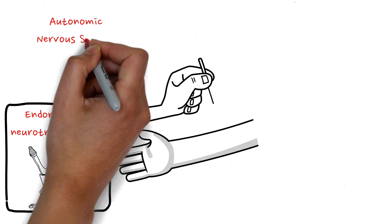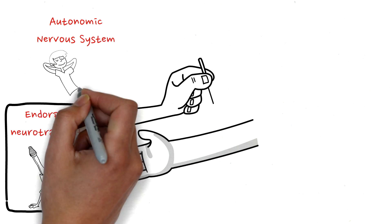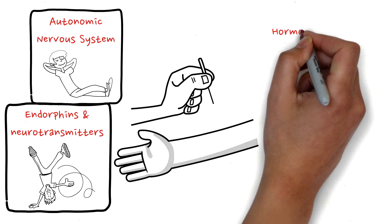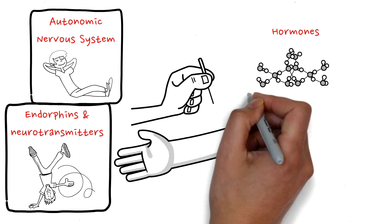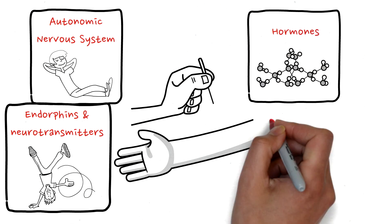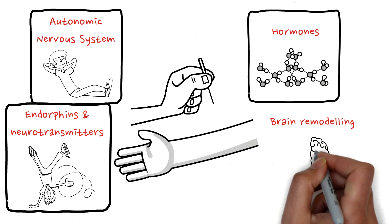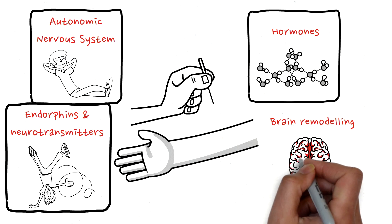Balancing the autonomic nervous system, which is responsible for managing our fight-or-flight response and relaxation. Affecting the endocrine system, which oversees hormone regulation and bodily functions. Encouraging neuroplasticity in the brain through impacts on cerebral blood flow, brain-derived neurotrophic factor, neurotransmitters, and by triggering structural brain changes.